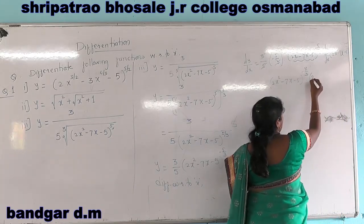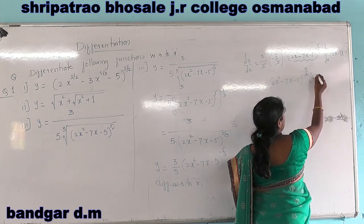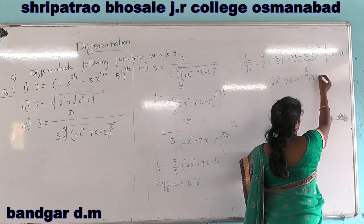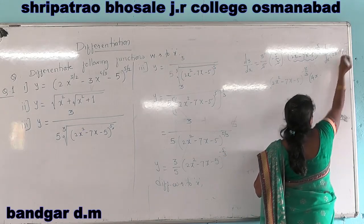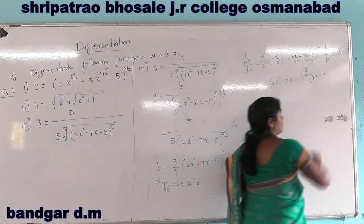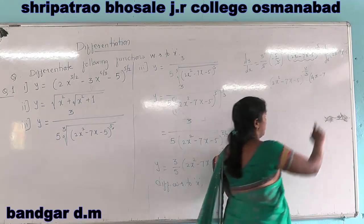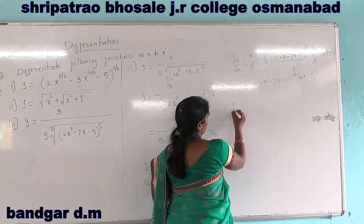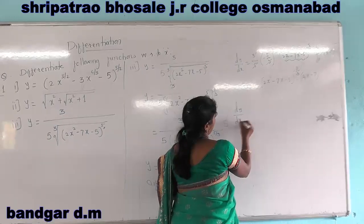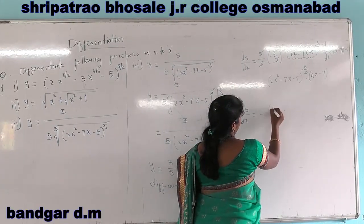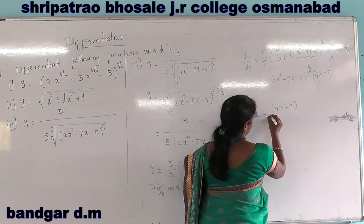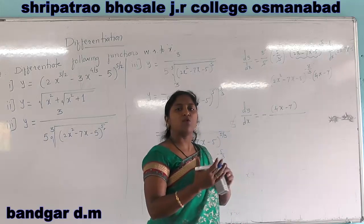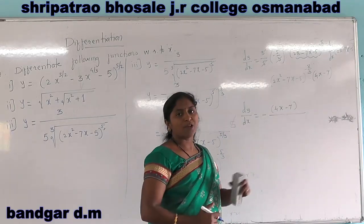The derivative of 2x squared is 2 into 2x, giving 4x. The derivative of minus 7x is minus 7. The derivative of minus 5, a constant, is 0. So the inner derivative is 4x minus 7. Our dy by dx becomes minus 1 into 4x minus 7, upon 2x squared minus 7x minus 5 raised to 8 by 3, since the negative power in the numerator becomes positive in the denominator.